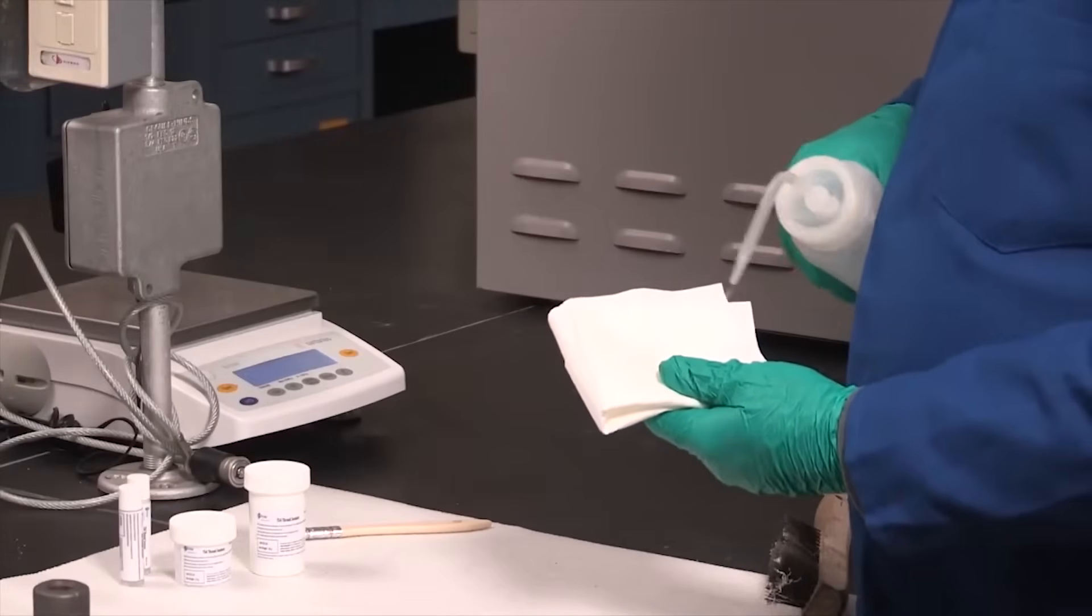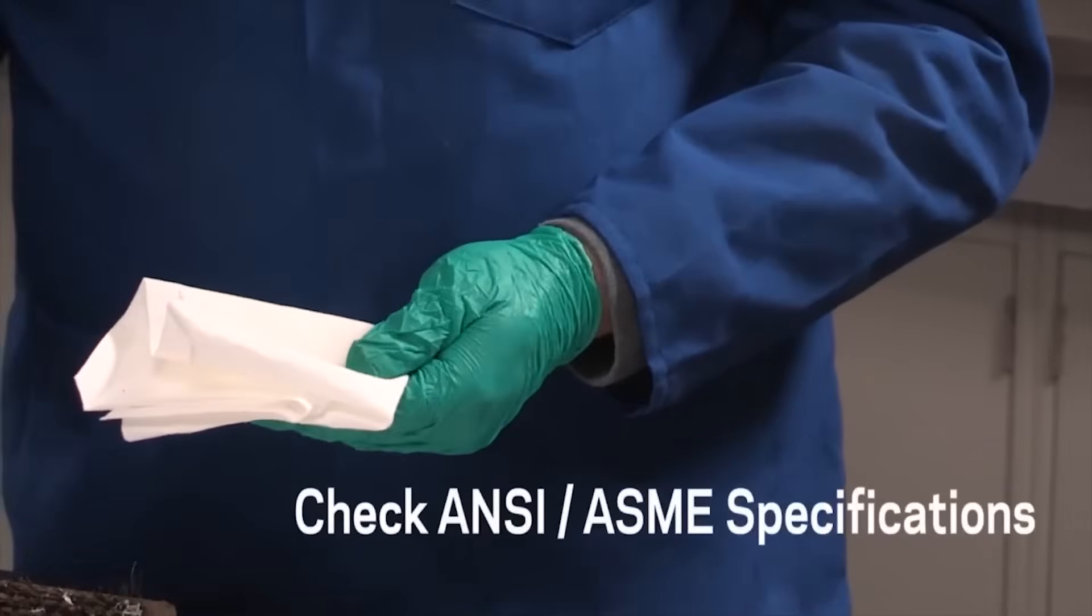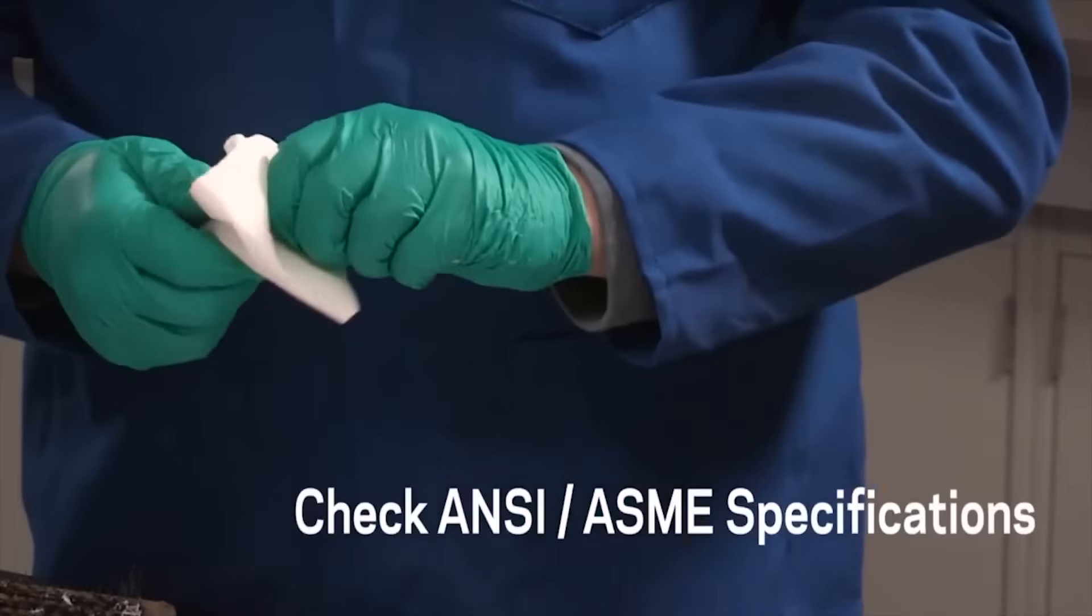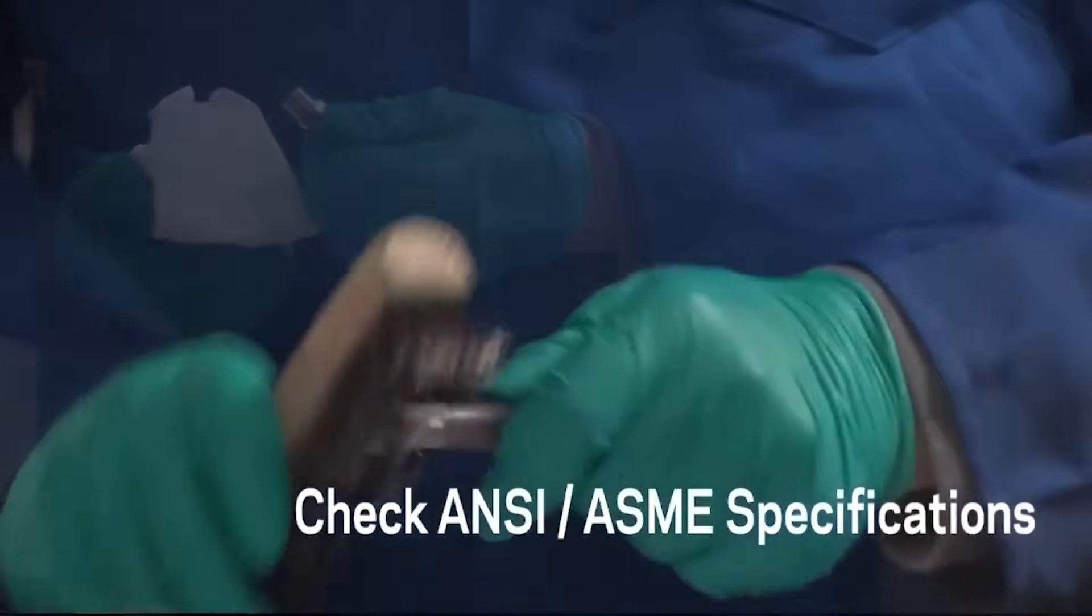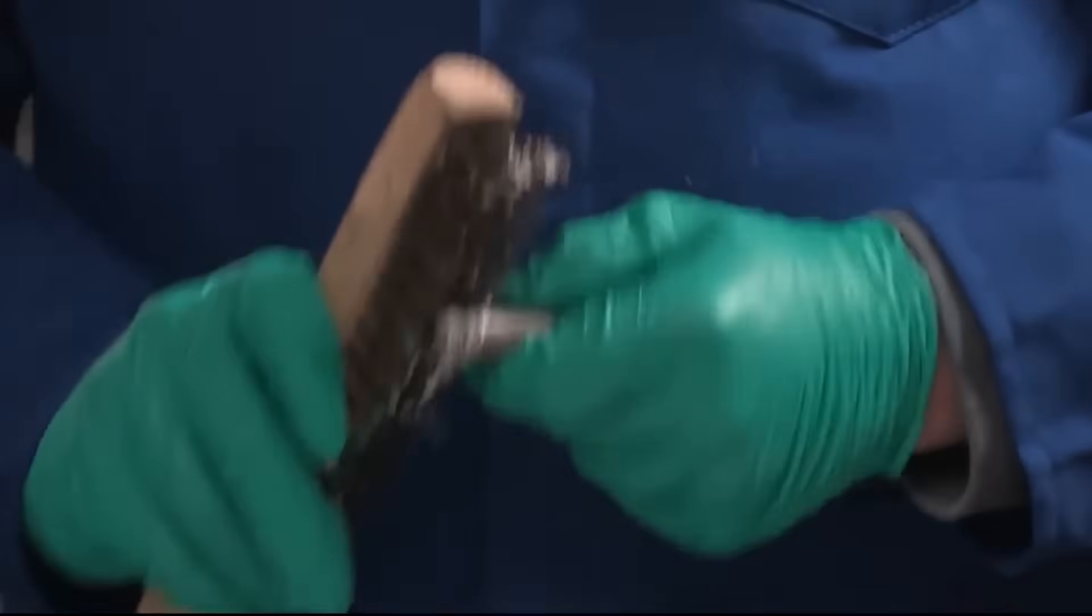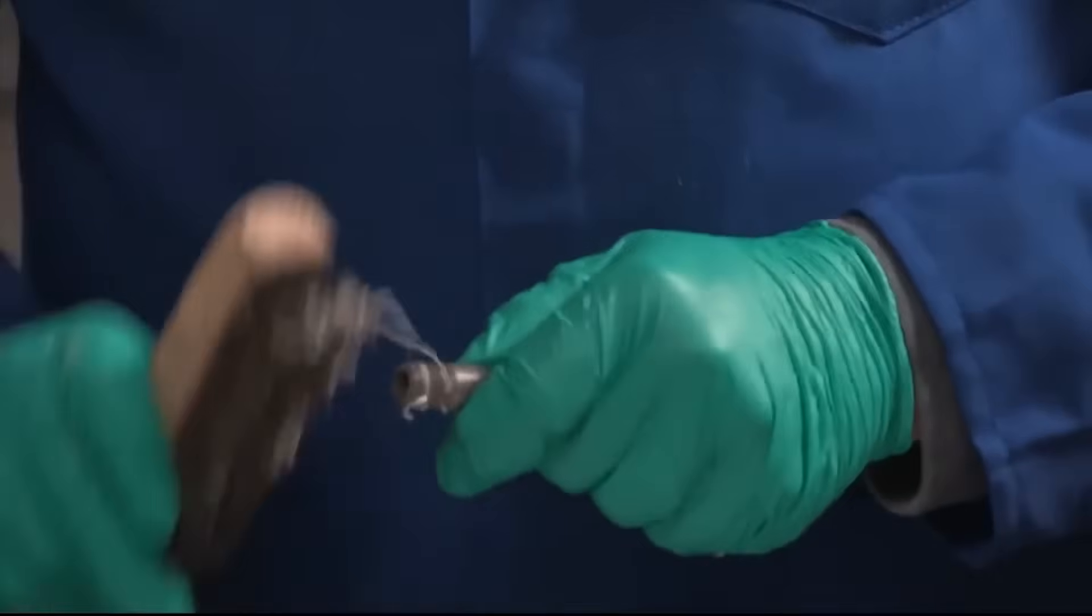Clean all pipe and fitting threads with a non-chlorinated solvent to remove any cutting or protective oil, and chase the threads with a stiff wire brush to remove burrs, debris, and old sealant such as PTFE tape, pipe dope, and anaerobic resin.